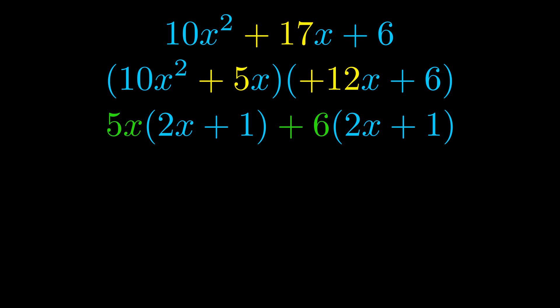Notice also how what remains inside of the parentheses is the same in both cases. The blue values are the same. Those blue values will become one of our factors and we will combine the two green values, the GCFs that we pulled out, to get the other one. And that is our fully factored equation.